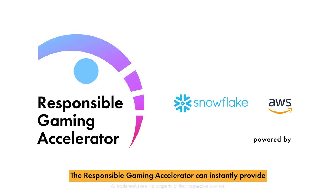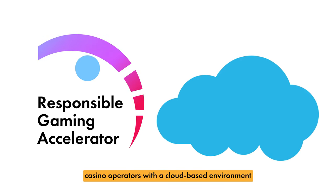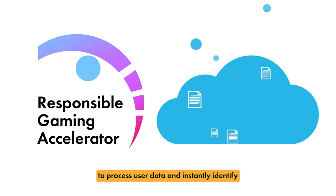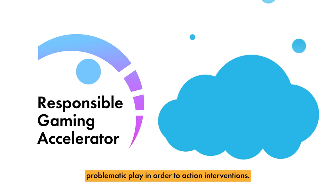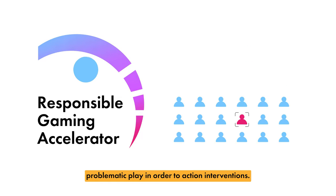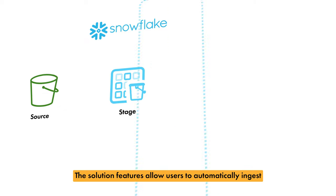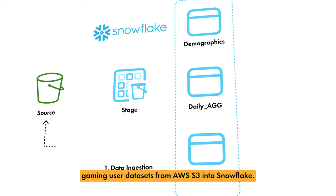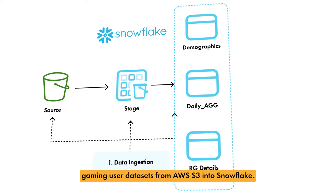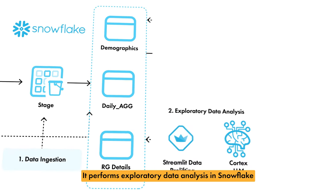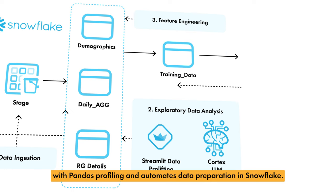The Responsible Gaming Accelerator can instantly provide casino operators with a cloud-based environment to process user data and instantly identify problematic play in order to action interventions. The solution allows users to automatically ingest gaming user data sets from AWS S3 into Snowflake, and performs exploratory data analysis in Snowflake with Pandas profiling.